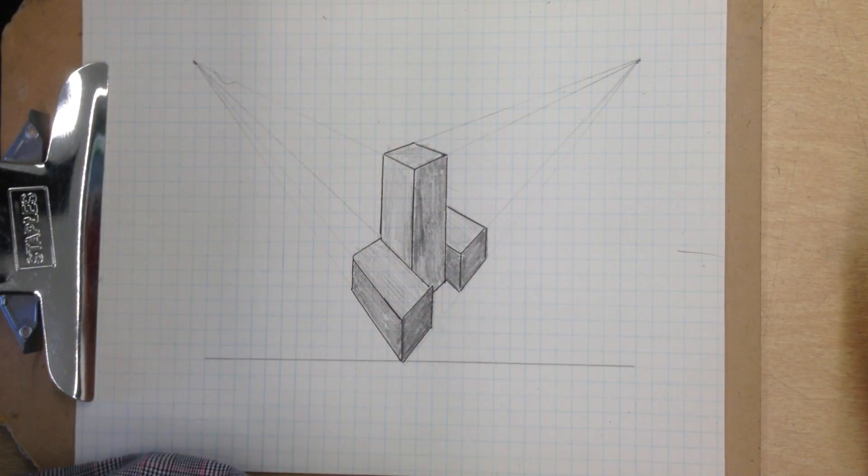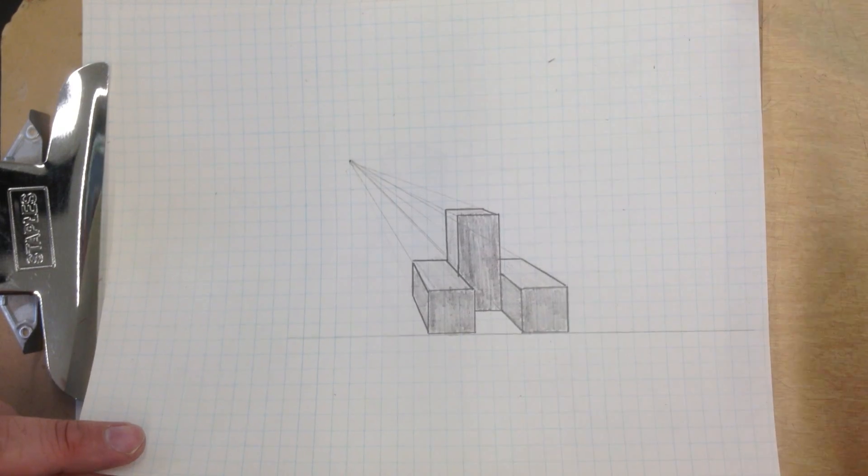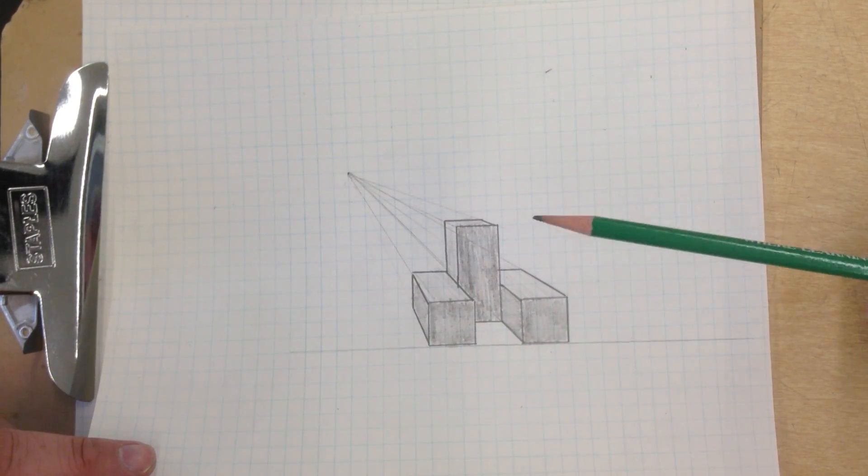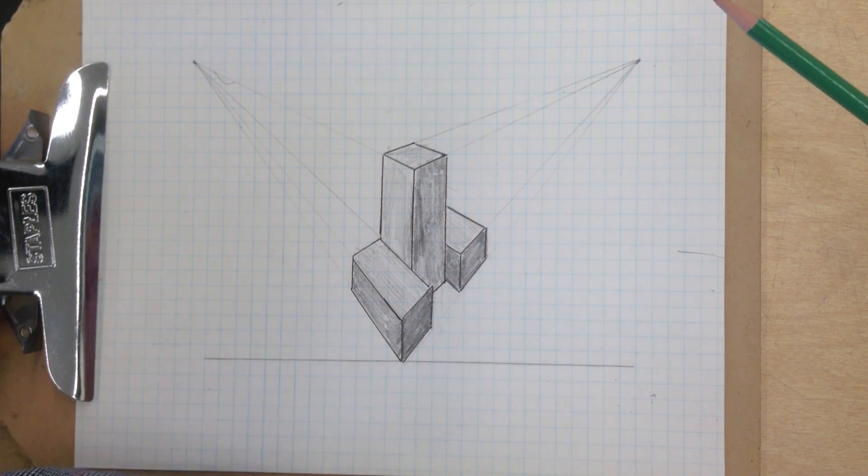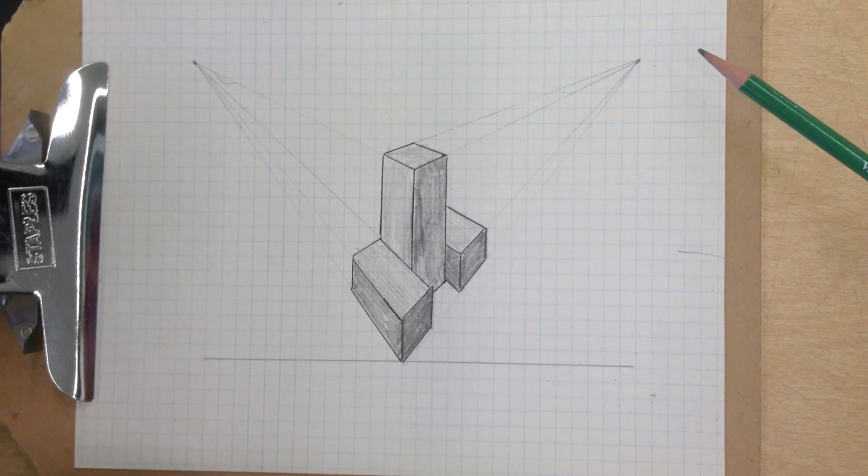Alright, we're going to do a two-point perspective of the same puzzle cube. We've got a single point perspective, you can see our vanishing point right here. This is what a two-point perspective of the same puzzle cube looks like.